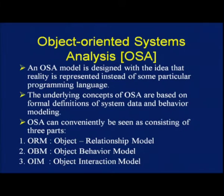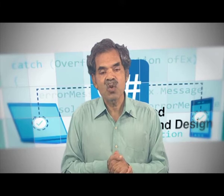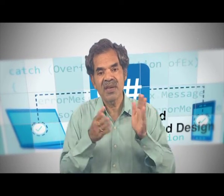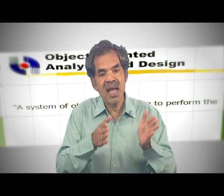The OSA model — its underlying concepts are based on formal definitions of system, data, and behavior modeling. OSA can conveniently be seen as consisting of three parts: ORM (Object Relationship Model), OBM (Object Behavioral Model), and OIM (Object Interaction Model). It has so many symbols and notations, each specific to OSA. The object relationship model is only for analysis; it has nothing to do with design. This was a good reason to believe that object oriented analysis is different.